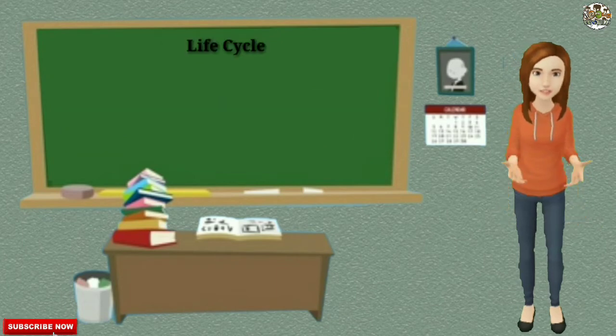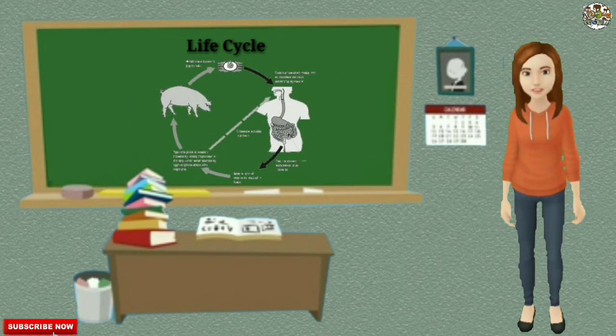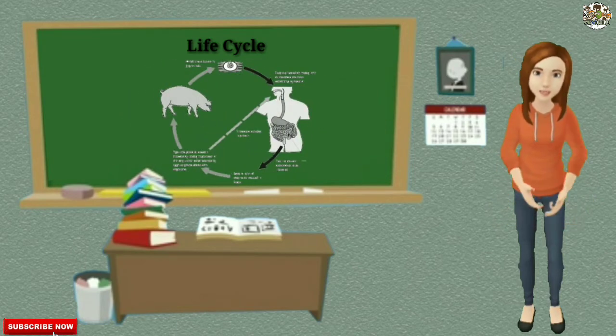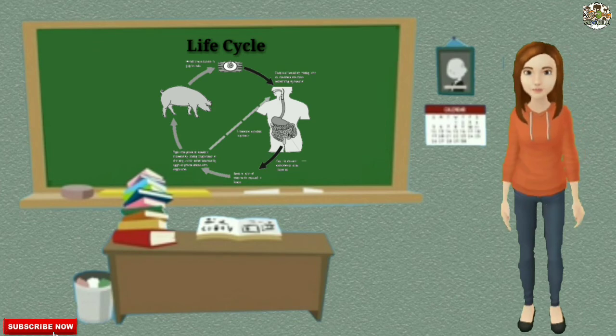Life Cycle: The life cycle of Tenia solium is indirect. It passes through pigs as intermediate hosts into humans as definitive hosts. From humans, eggs are released into the environment where they await ingestion by another host.